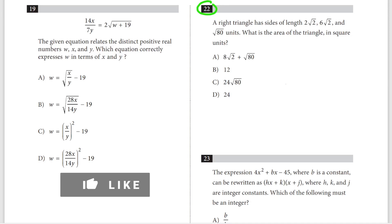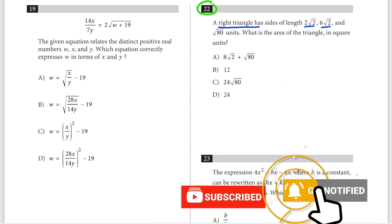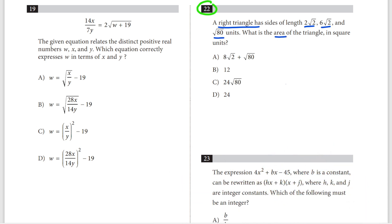How can you do this problem in 30 seconds or less? A right triangle has sides of lengths 2√2, 6√2, and √80. What's the area of the triangle in square units?